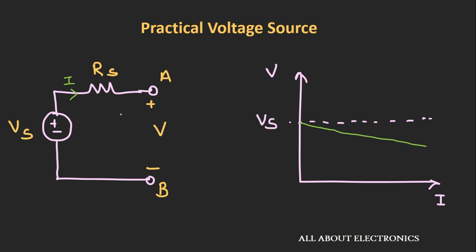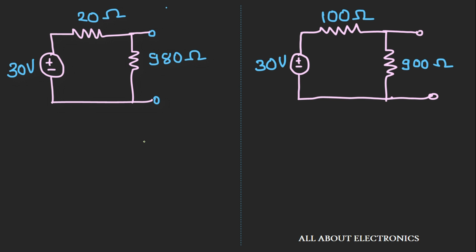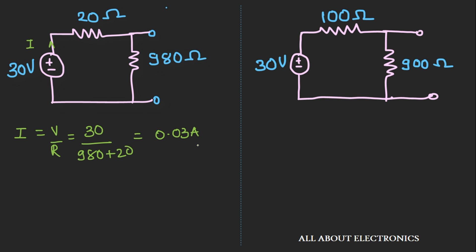Let us see through one example how the value of this series resistance affects the output load voltage. Here we have two voltage sources supplying the same voltage, but with different series internal resistances. The load is connected such that the current drawn through both voltage sources is the same. For the first voltage source, the current I equals V divided by R, where V is 30V and R is 980 plus 20 ohms. The current I comes out to be 0.03 amperes. Likewise, in the second voltage source, the current I drawn is equal.